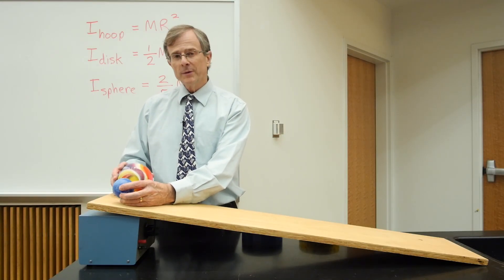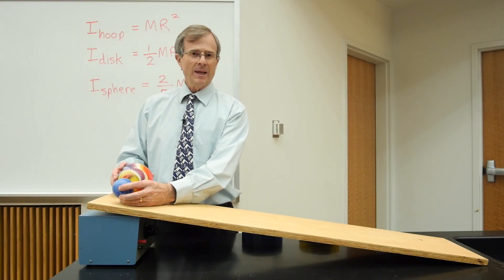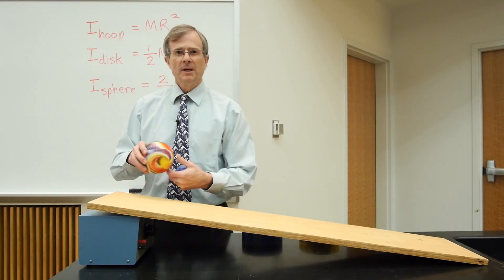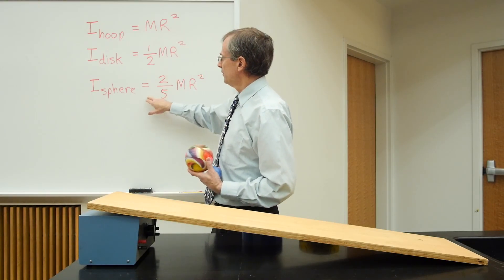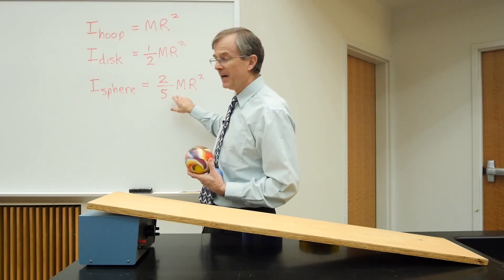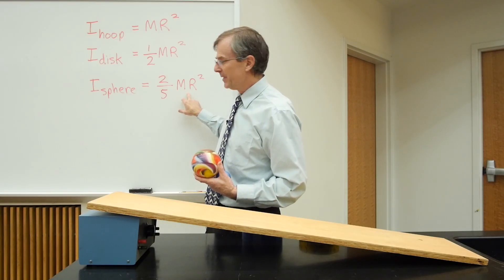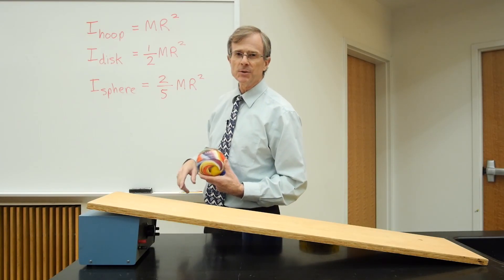As it turns out, both the mass and the radius cancel out of the calculation. And you'll find that the speed at the bottom for these two spheres, even though their radii and their masses are different, depends only on this factor two-fifths here.